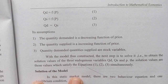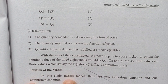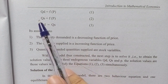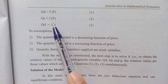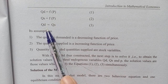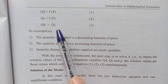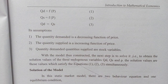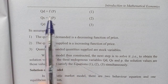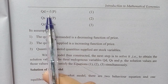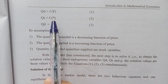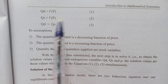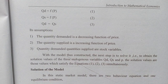So, QD is equal to a function of P. QS is equal to a function of P. And QD is equal to QS — that is, QD as a function of price, QS as a function of price, and QD equals QS.